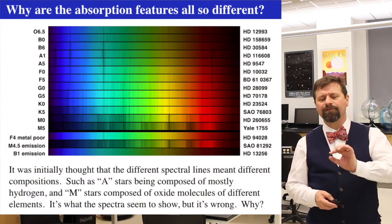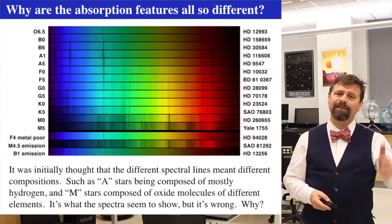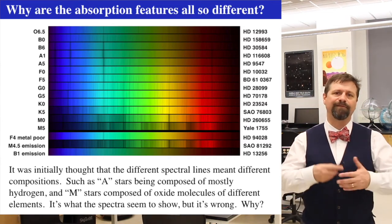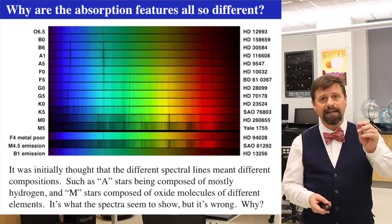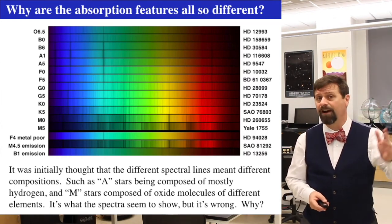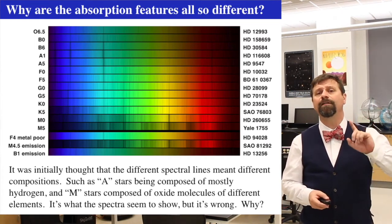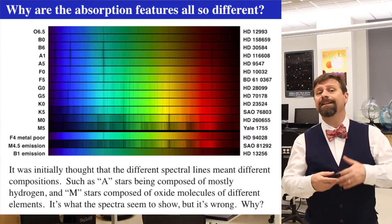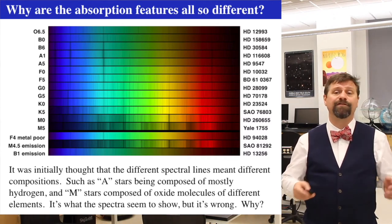Why are all the absorption features different for each spectral class? It was first thought that the composition of the star determined the absorption. This makes sense — if you put sodium in a Bunsen burner and look at the gases, you see emission lines of sodium. And if you have a very hot source of light behind sodium vapor, you'll see sodium absorption on top of a continuous spectrum. So it was totally natural to think that absorption lines in a star would be directly related to composition.